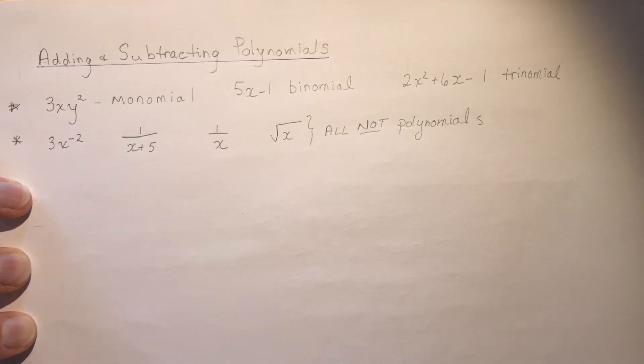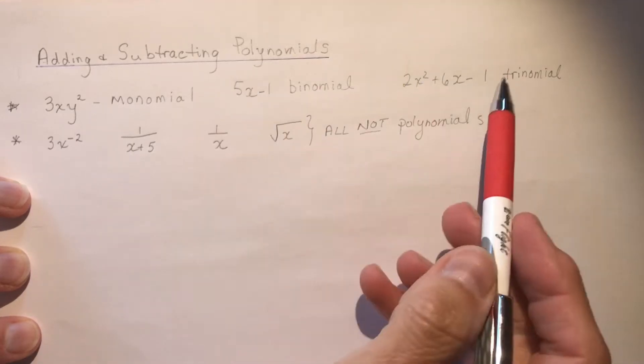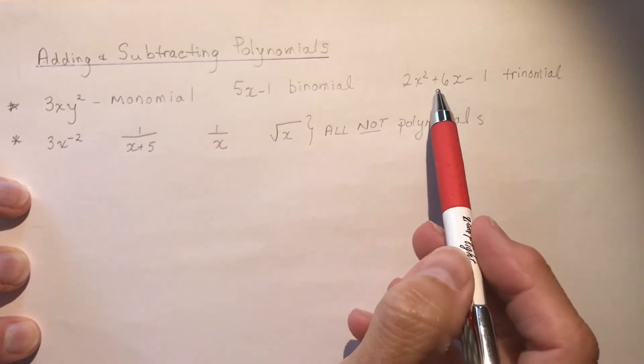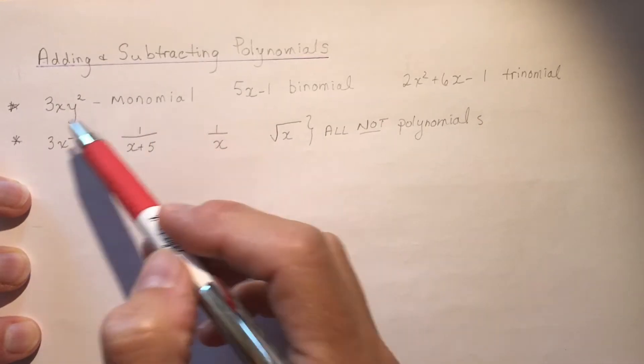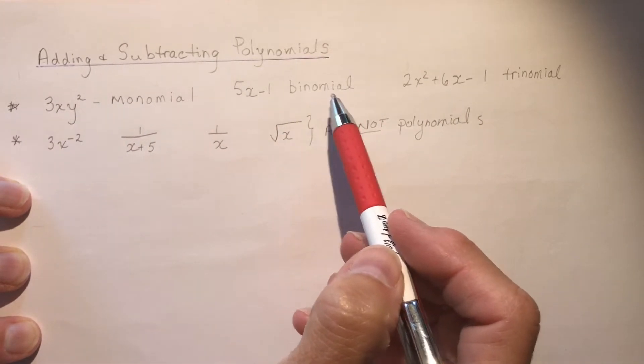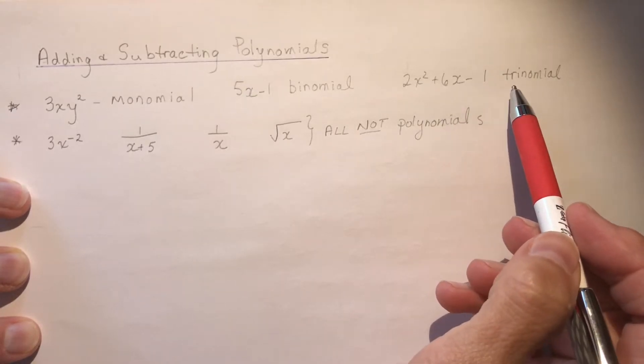Chapter two begins with adding and subtracting polynomials. It talks about polynomials because these are terms like any of these three here. A monomial is a polynomial, a binomial is a polynomial, and three terms is a trinomial.